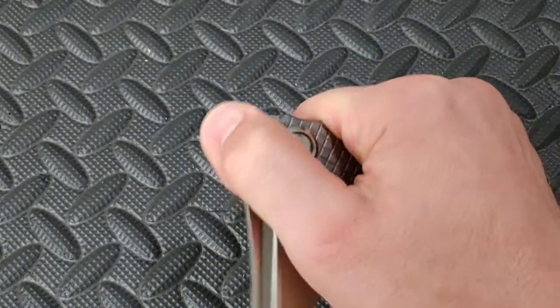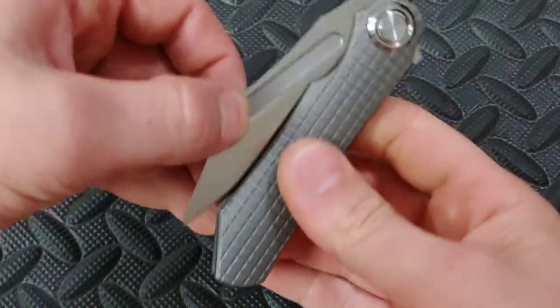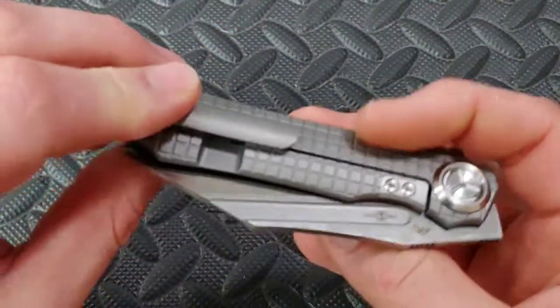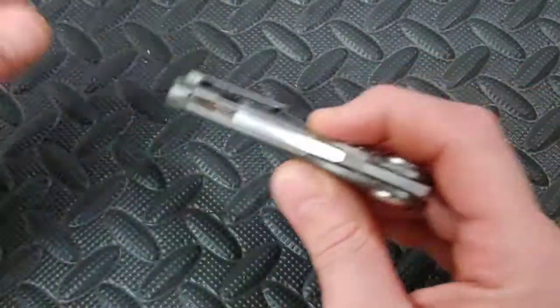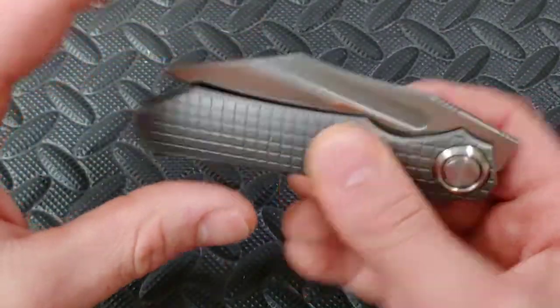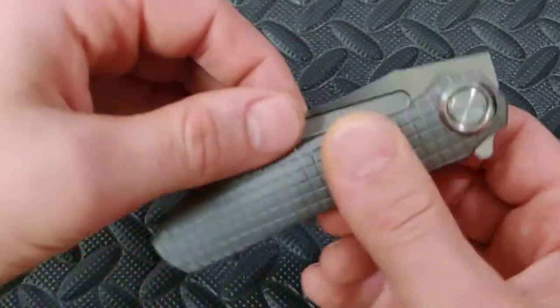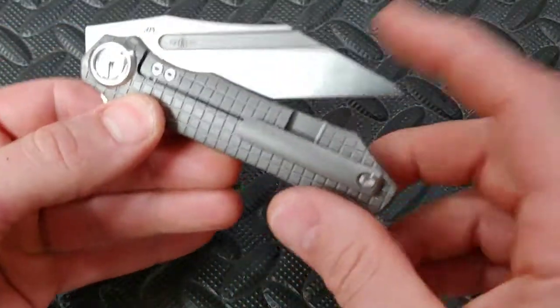You can slow roll it nice and easily. The detent is nice and crisp. I'm not holding the lock bar. Sometimes people hold the lock bar and roll it down and it makes it really click. Right now I'm not doing that. Here, I'll just do it on the side so you can see.